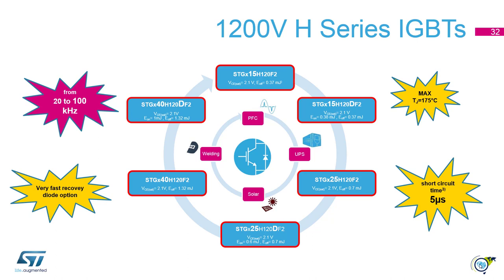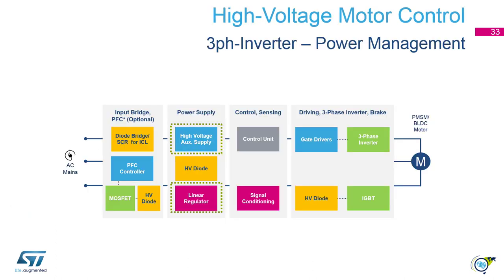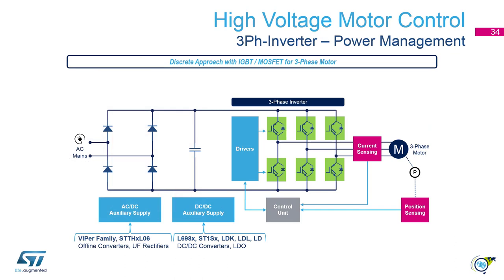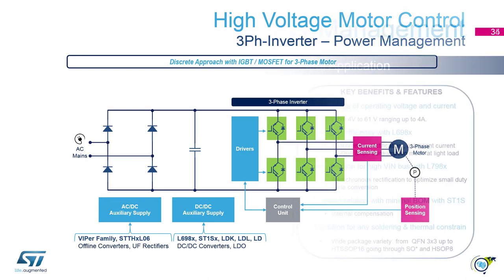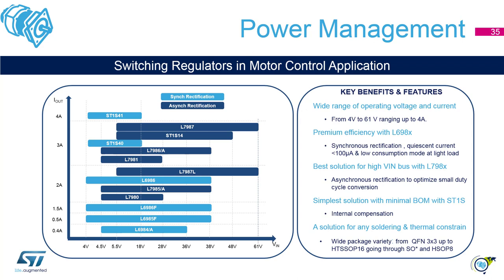The H series features a short circuit withstand time of up to 5 µs. Let's move to power management, auxiliary power supply and linear regulator. We are now in the bottom left blue boxes showing the AC-DC and DC-DC auxiliary power supplies. ST offers a wide range of switching regulators optimized for different requirements.